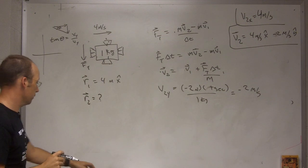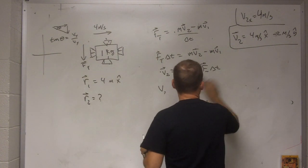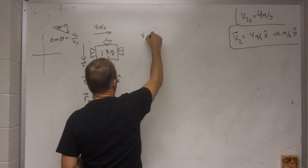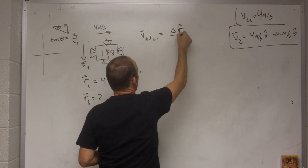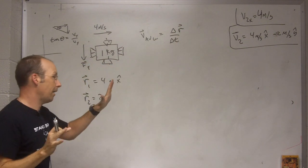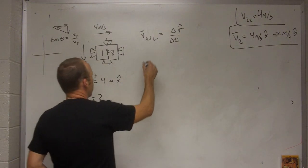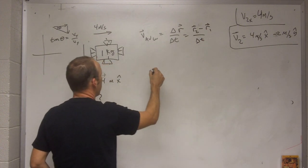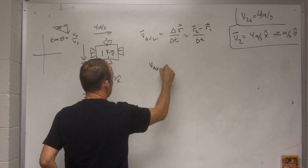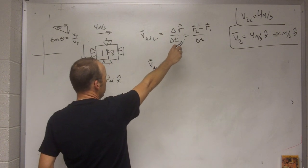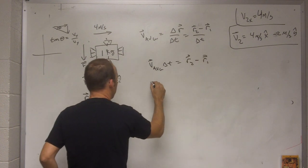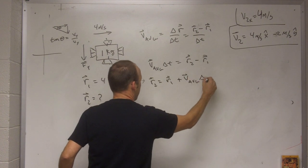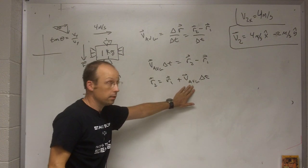So what's r2 after the 1 second? Well, I can do the same thing I did before. I can use the definition of average velocity. So I can say v average, I'm going to write it as a vector now, is delta r over delta t. Where r is, it's not x, it's not y, it's both x and y. So this is going to be r2 minus r1 over delta t. So multiply both sides by delta t, I get v average delta t equals r2 minus r1. So r2 equals r1 plus v average delta t. And now what's the average velocity?